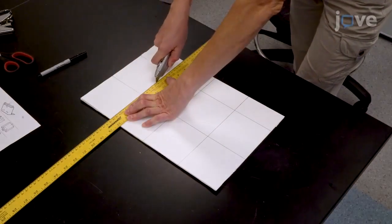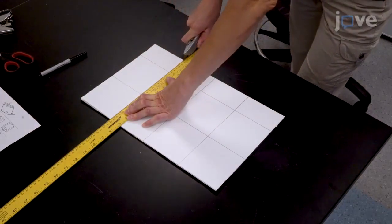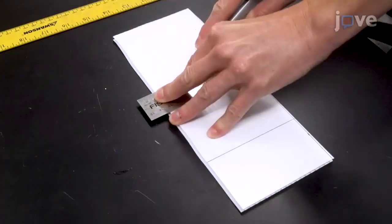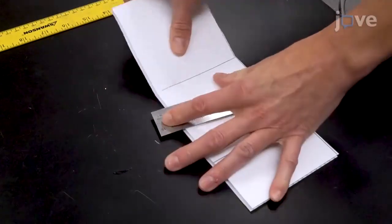To construct a radiation shield, use a utility knife to cut corrugated plastic sheets into one 15 cm and two 10 cm squares.